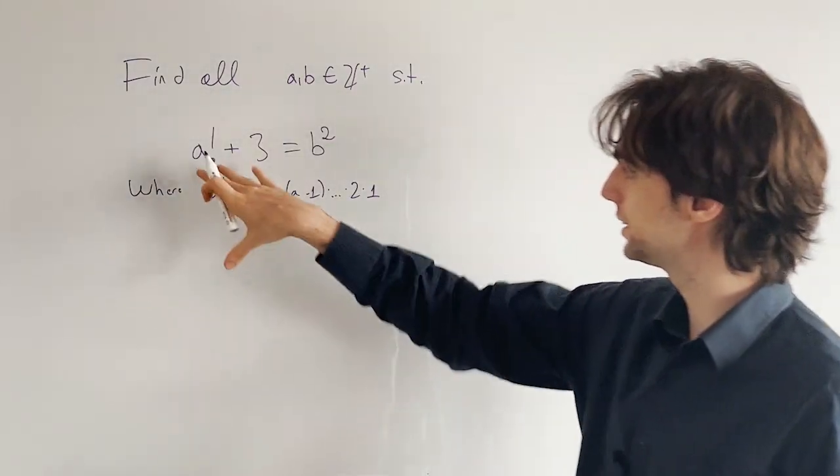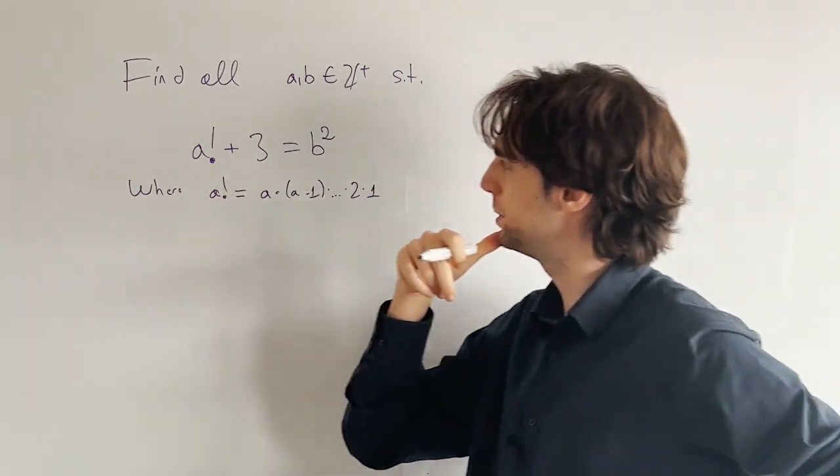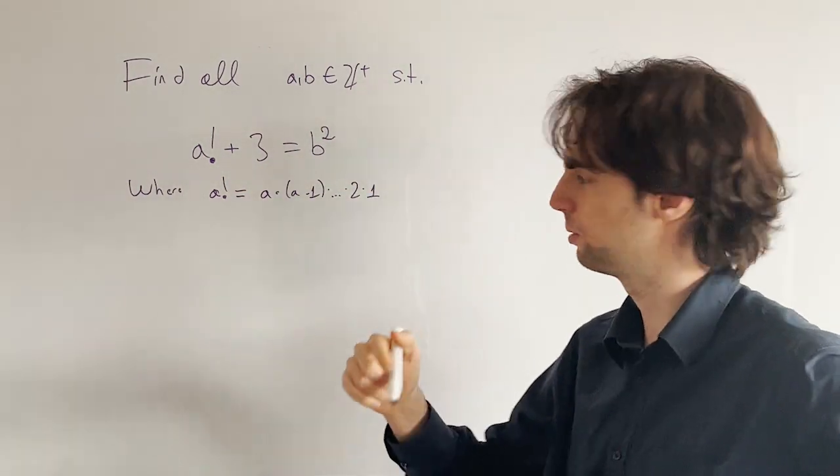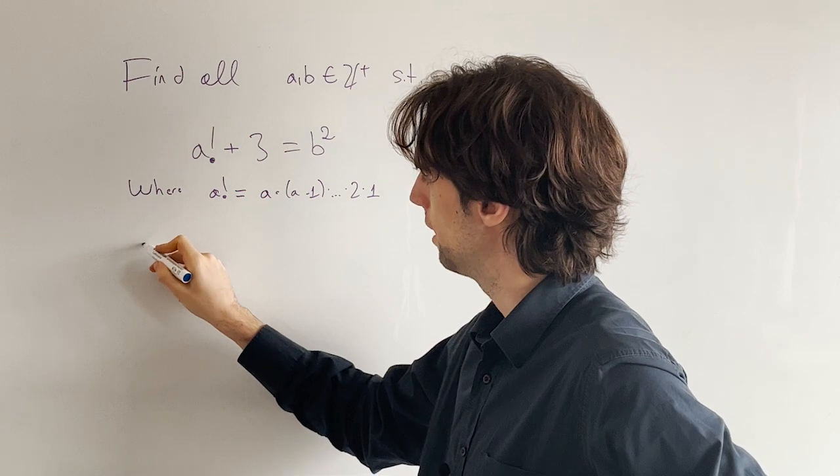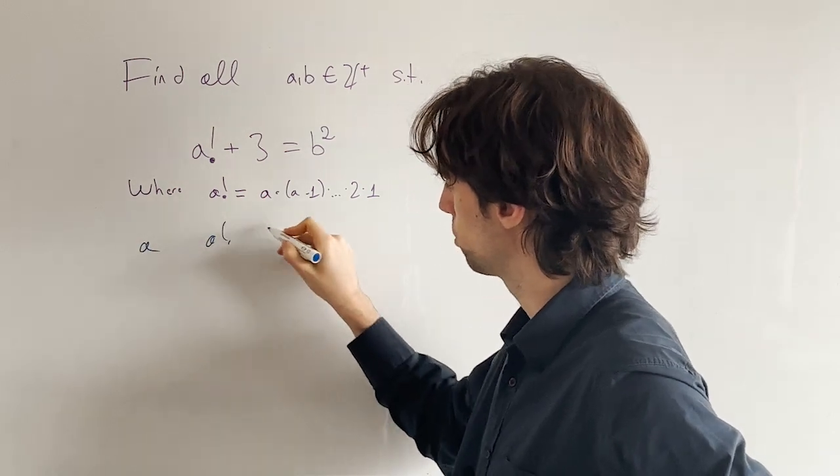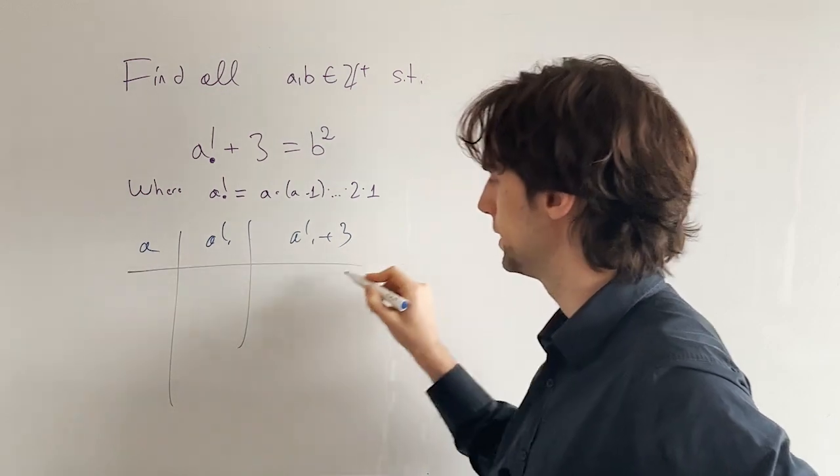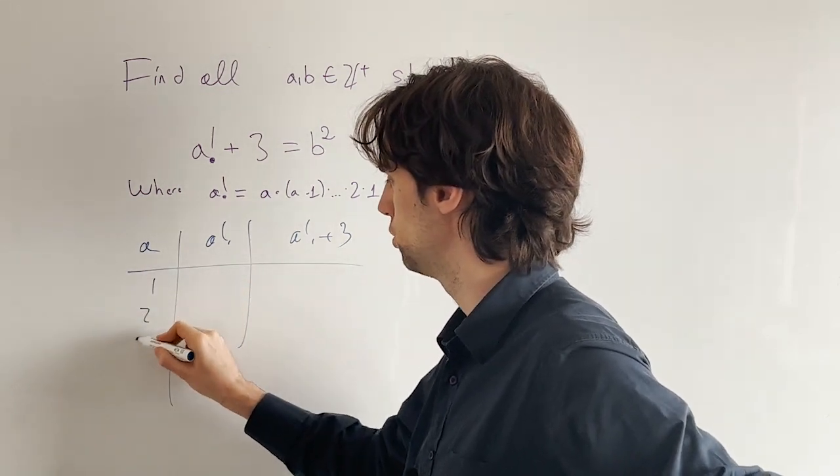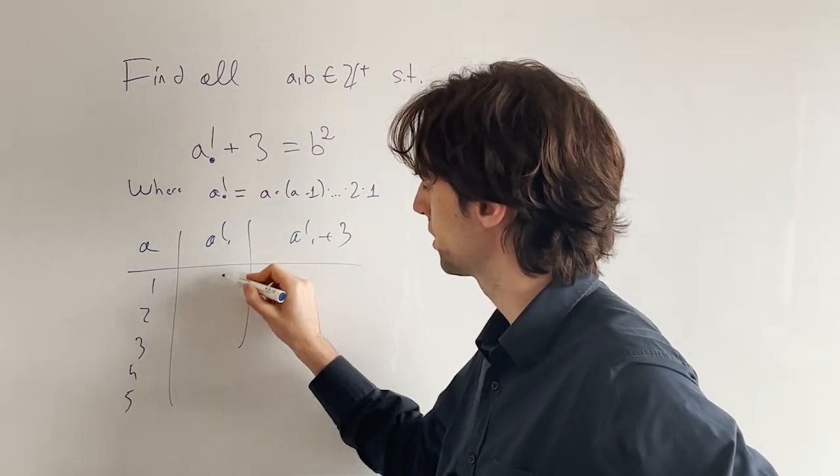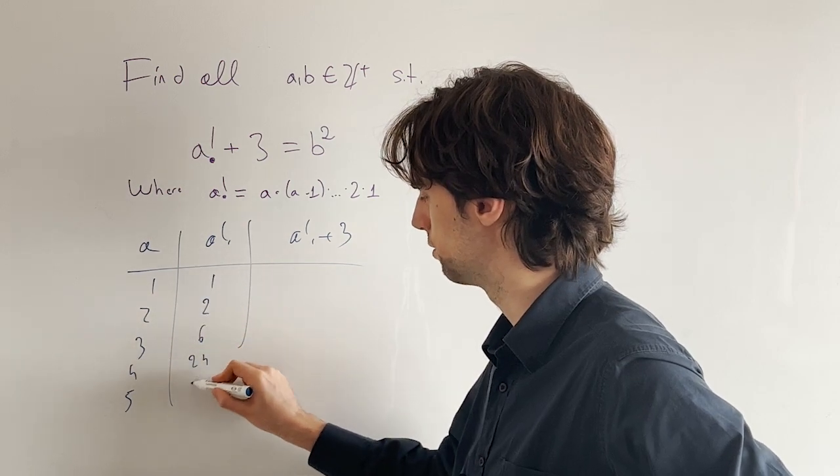So with this problem, what we have is a factorial plus 3 is b squared. Let's write down the first couple of factorials. So we have a, a factorial, and a factorial plus 3. Let's see what happens. We have 1, 2, 3, 4, 5. We get 1, 2, 6, 24.